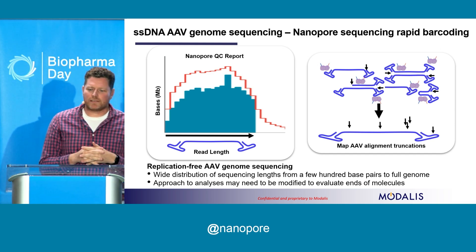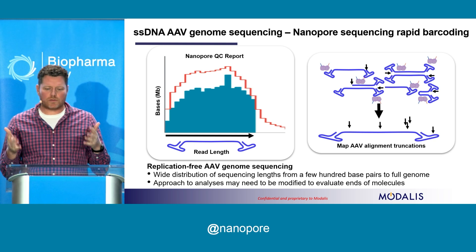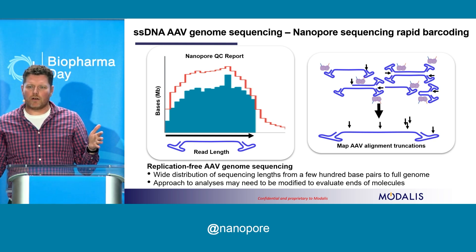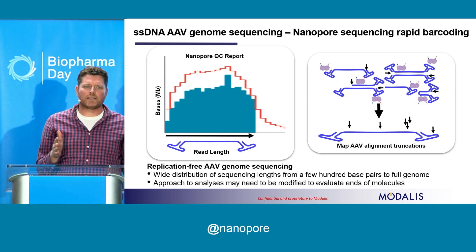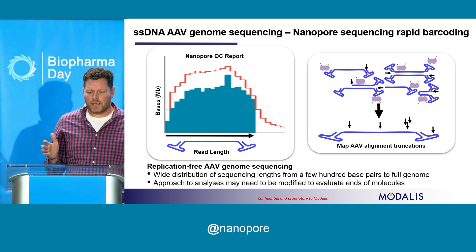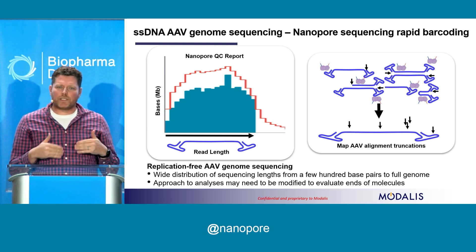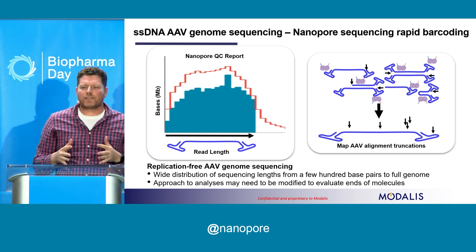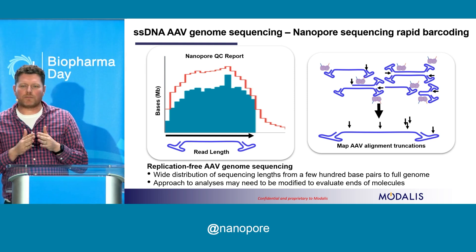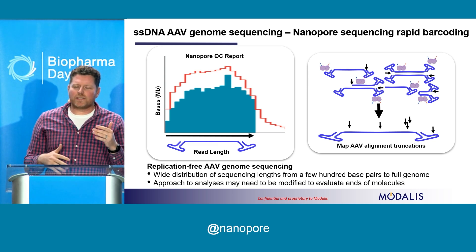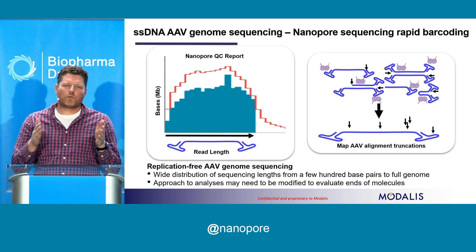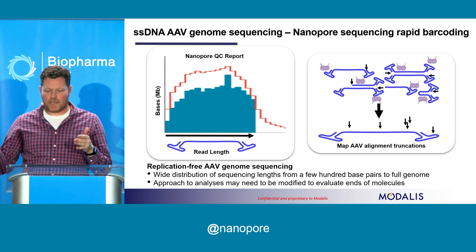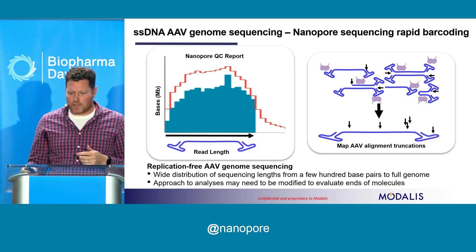We tested out some AAV genomes and sequenced them. We were pleased to see that some read lengths extended the entire length of the genome, though not all did — we had shorter read lengths distributed throughout. We were optimistic this would give us information about the truncated species. But since we can't depend on a sequencing read from end to end, instead of looking at the entire genome we were more interested in the ends of the alignments — specifically, where these sequencing reads end — and we thought this might give us more information on these truncations.